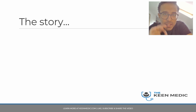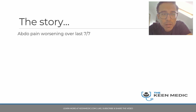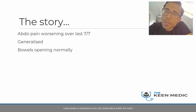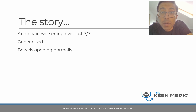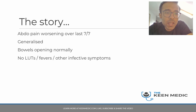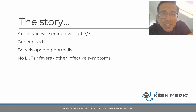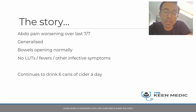Looking closer at the history: the abdominal pain has been worsening over the last seven days and is generalized. He has been opening his bowels normally, about one to two times per day, and is passing urine without lower urinary tract symptoms. He has no fevers or other infective symptoms, which pretty much rules out infective causes.